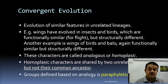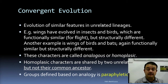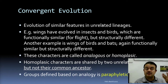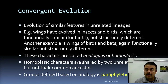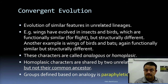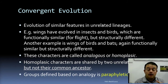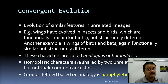Convergent evolution results in analogous structures, not homologous structures. Homologous structures arise from divergent evolution. Another example is the wings of bats versus wings of birds. Bats are mammals — vertebrates — and their wings are basically modified forelimbs, not exactly like bird wings. Although the function is the same — locomotion, to fly — they are structurally different.